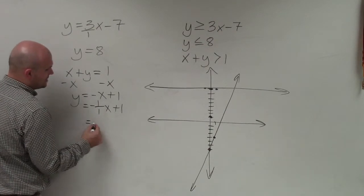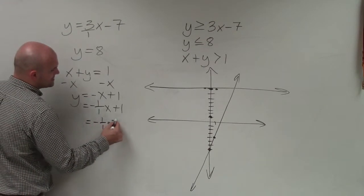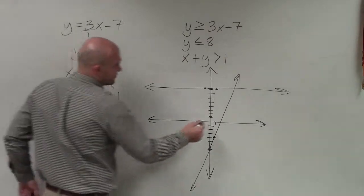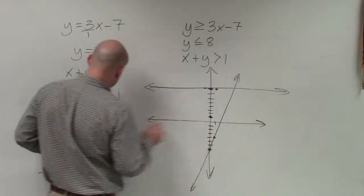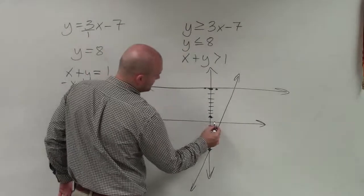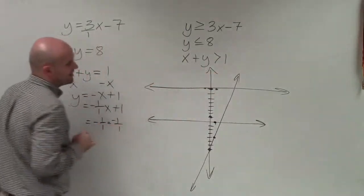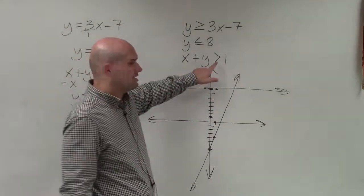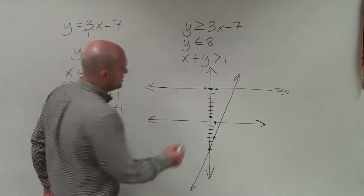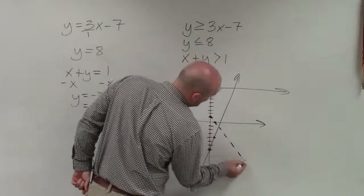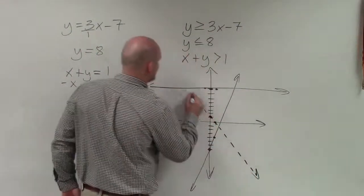In this case, I'll rewrite negative 1 over 1 as negative 1 over 1. So therefore, I'm going to go down 1. And then since my denominator is positive, I'm going to go to the right 1. Now in this case, we go and look back at our inequality. And we see that our inequality is greater than, not greater or equal to. So therefore, this boundary line is not a part of the solution. So it's going to be dashed.